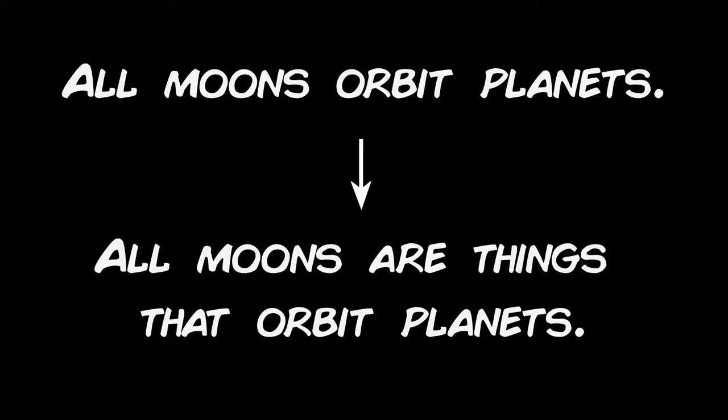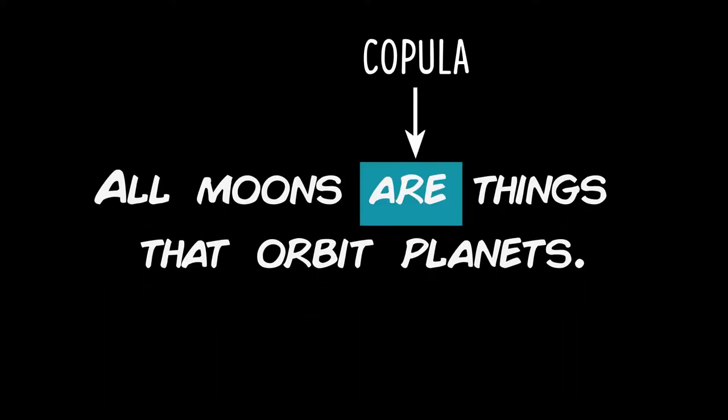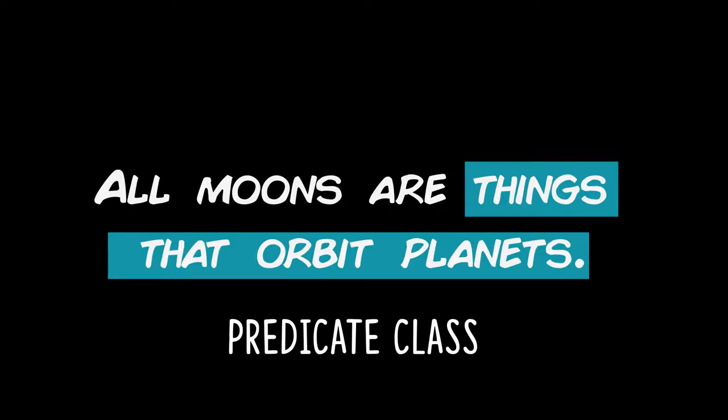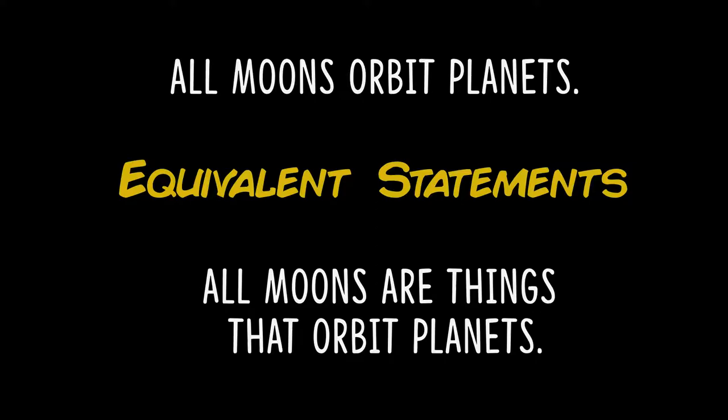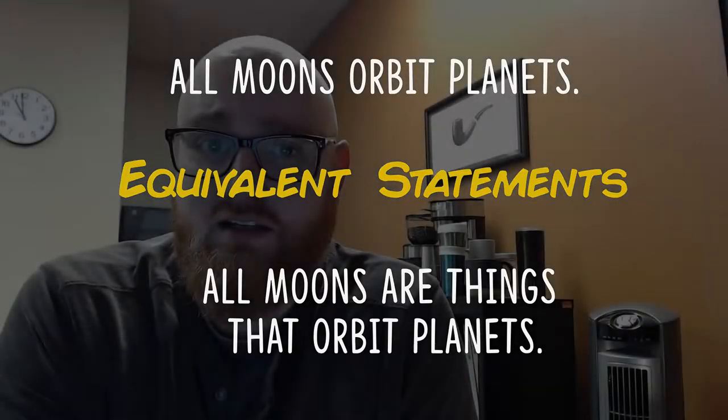We'll go into detail and have you do exercises on this a bit later. For now, 'all moons orbit planets' — what we are really saying is that all moons are things that orbit planets. Then the copula is 'are,' and the predicate is 'things that orbit planets.' The rewritten statement conveys the same information but makes each part of the categorical statement explicit. When working with categorical logic, we want statements to be explicit about those four parts.